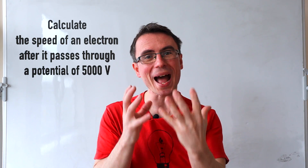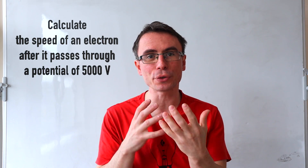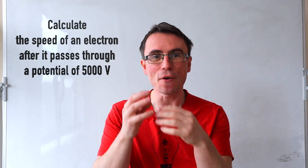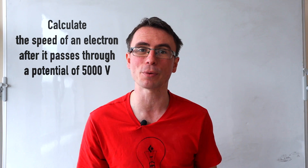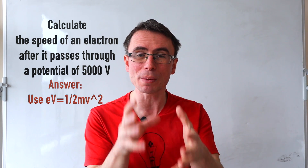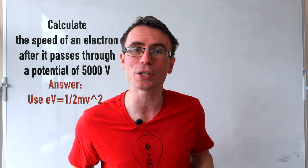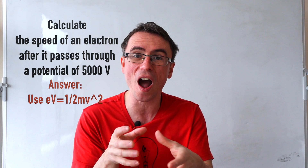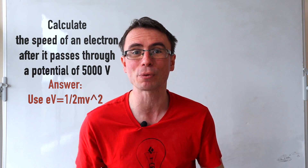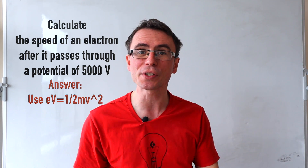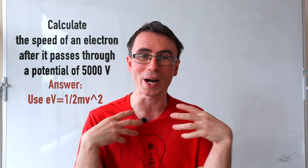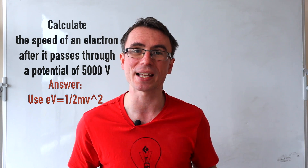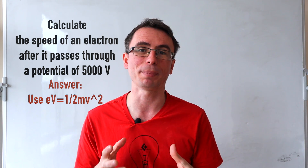If we have an electron that passes through a potential difference, very often we're not given enough information to use the SUVAT equations. In that case, simply using the equation eV = ½mv² will allow us to work out the speed of that electron, or any charged particle, as it passes through the plates.